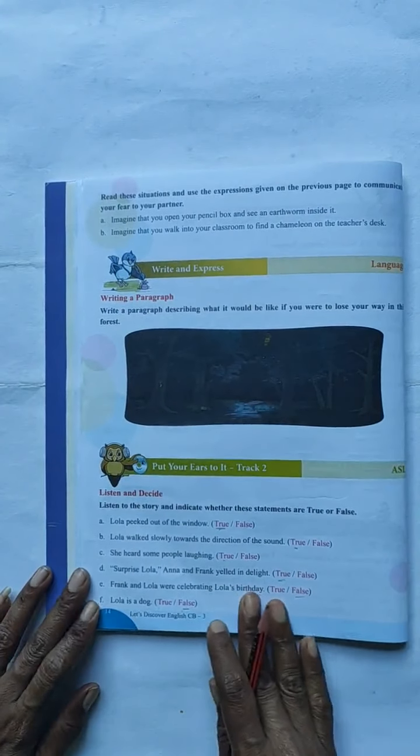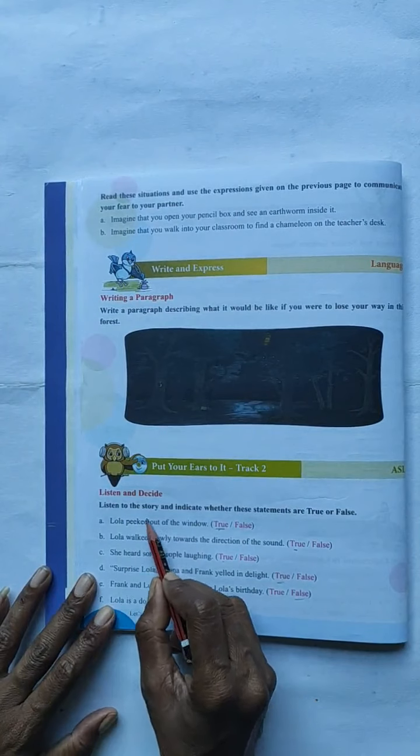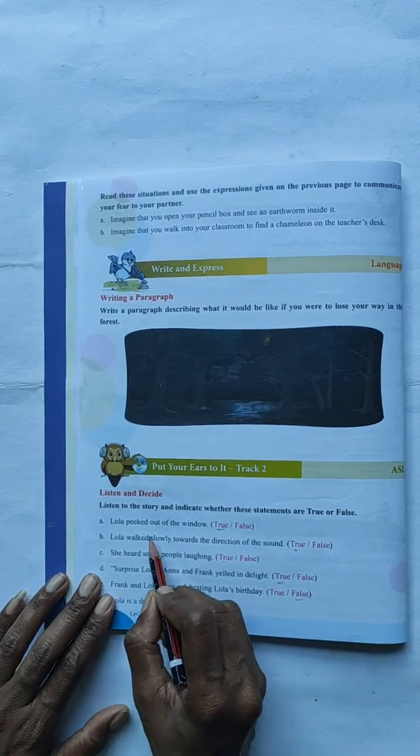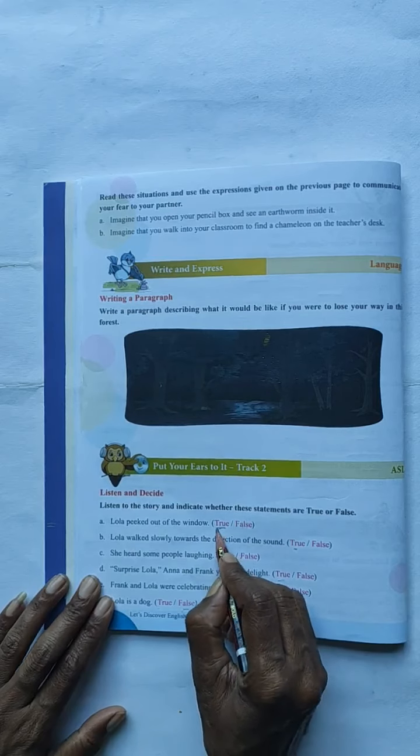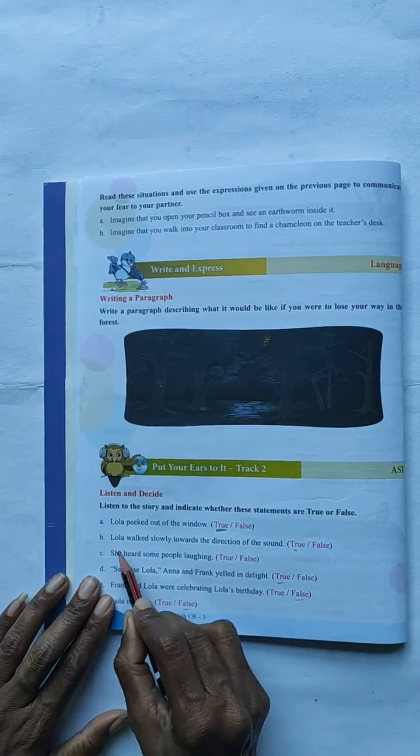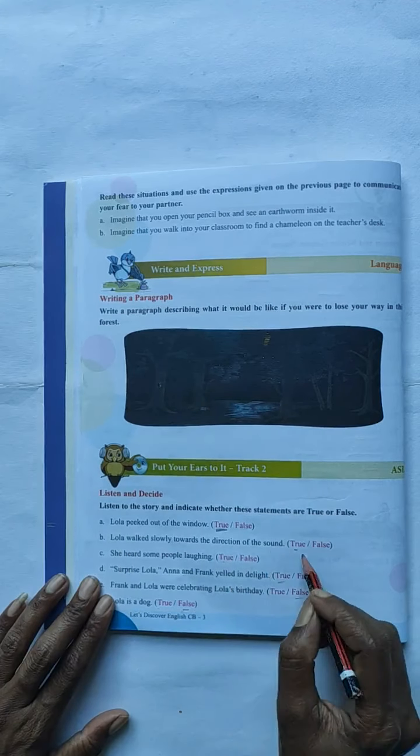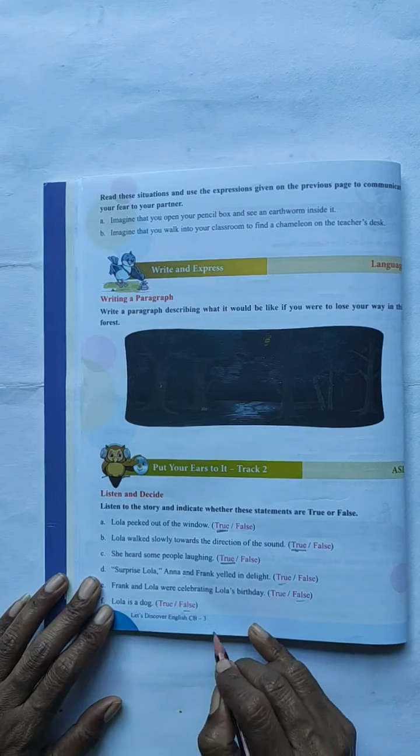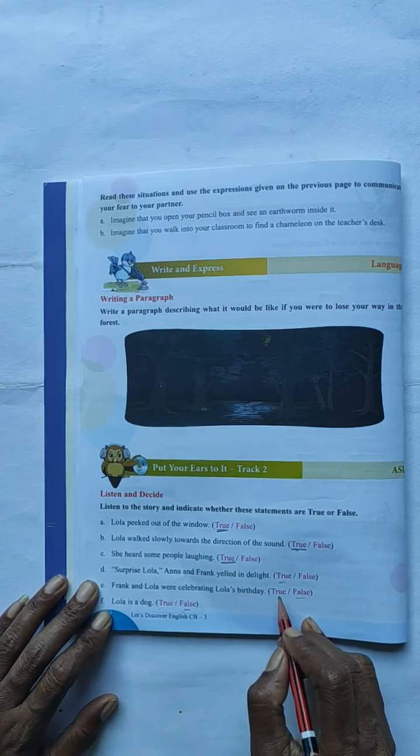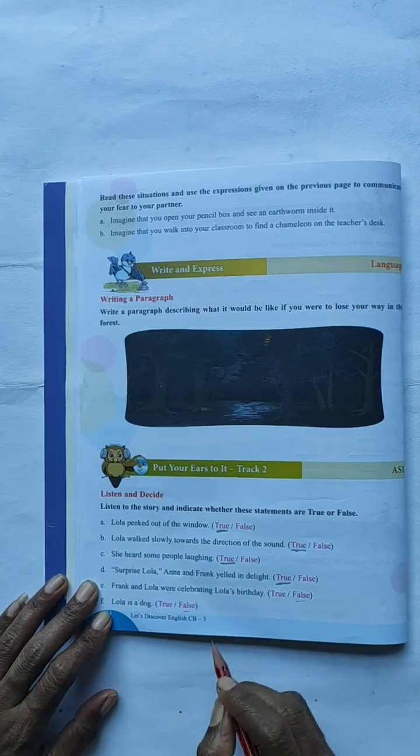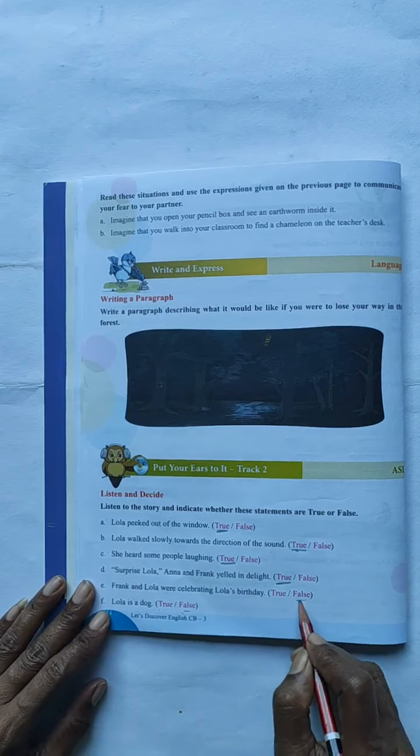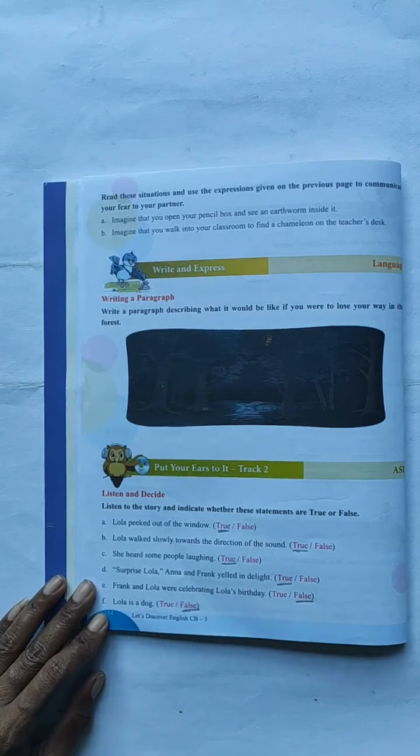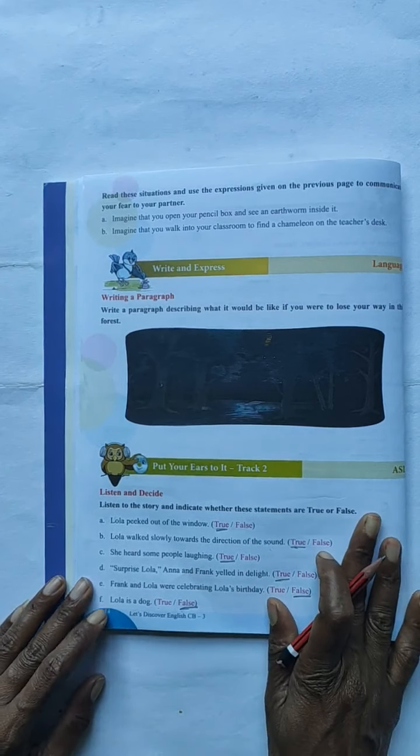Next, you have to come to the last. The last one. Listen to the story and indicate whether these statements are true or false. Lola peeked out of the window. Yes. Lola peeked out of the window. Lola walked slowly towards the direction of the song. Yes, true it is. She heard some people laughing. Yes, true. Surprise Lola. Anna and Frank yielded in delight. Yes. Frank and Lola were celebrating Lola's birthday. False. Lola is a dog. False.